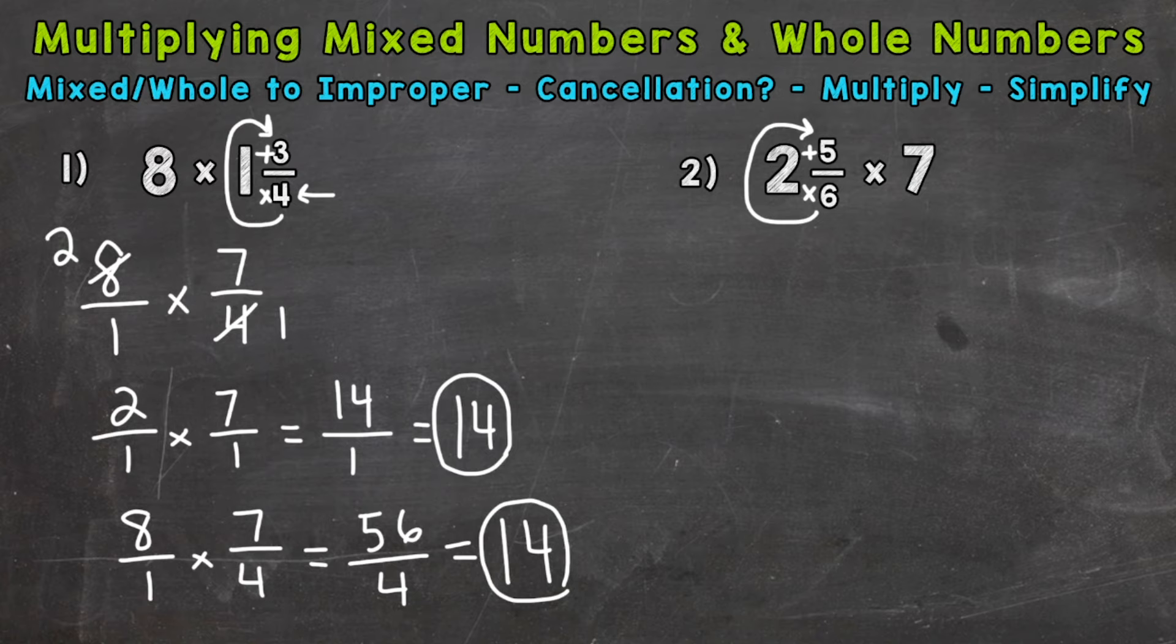So 6 times 2 is 12 plus 5 is 17. Keep the denominator of 6 the same. Times. Remember, for any whole numbers, we can just put it over 1 to put it in fractional form. So 7 over 1 there.